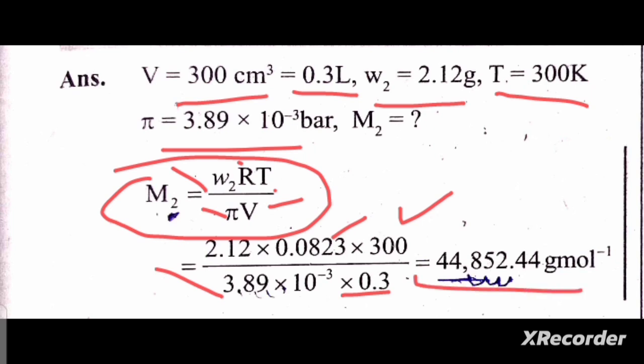When we calculate, the molar mass of the protein is 44,852.44 grams per mole.